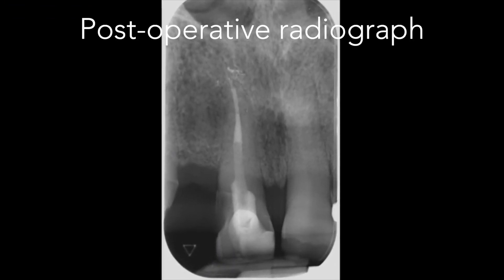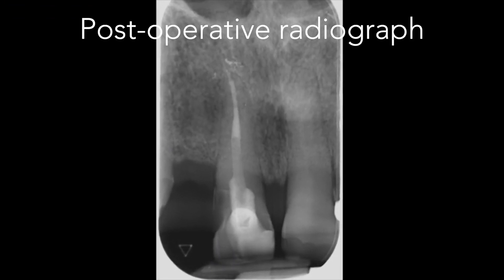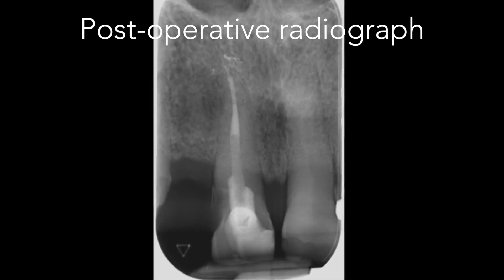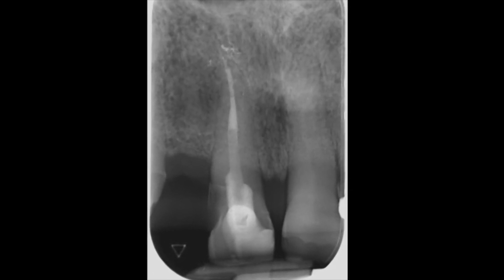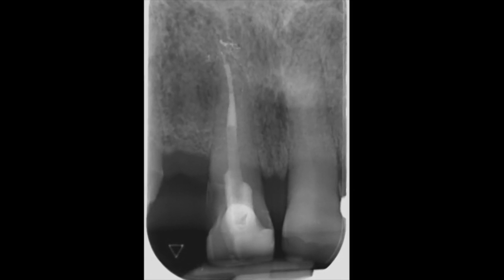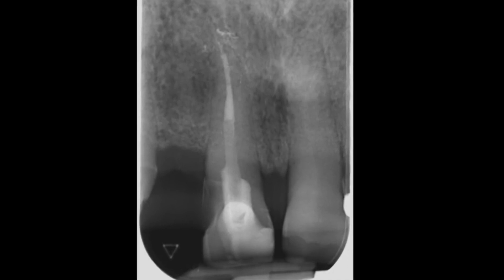My final radiograph shows a good homogeneous seal from apical to coronal. Well, I do hope you enjoyed that presentation — stay tuned because there are many more exciting cases in the pipeline. Don't forget to subscribe if you haven't already, and above all, enjoy your endo.